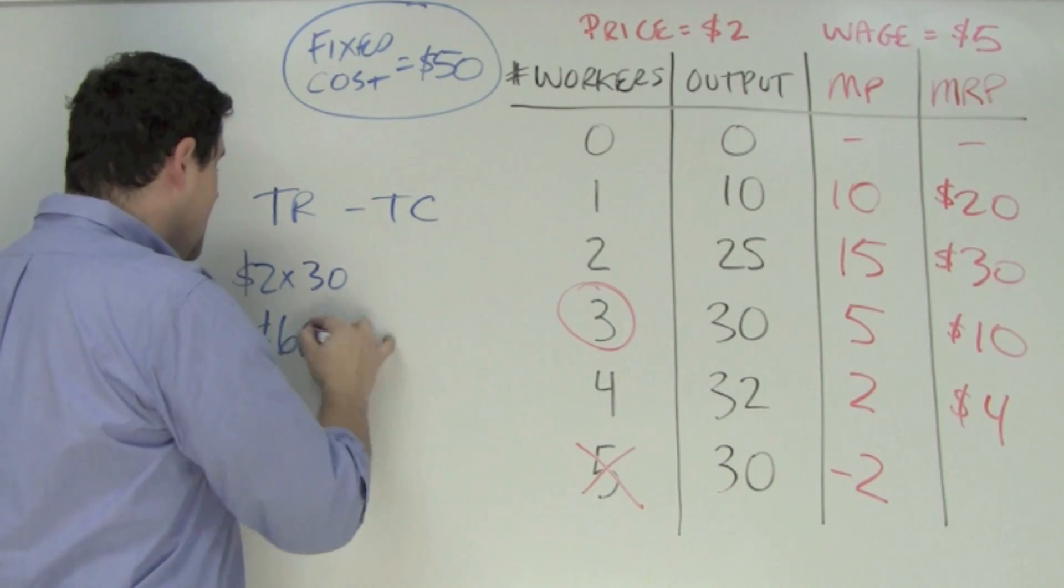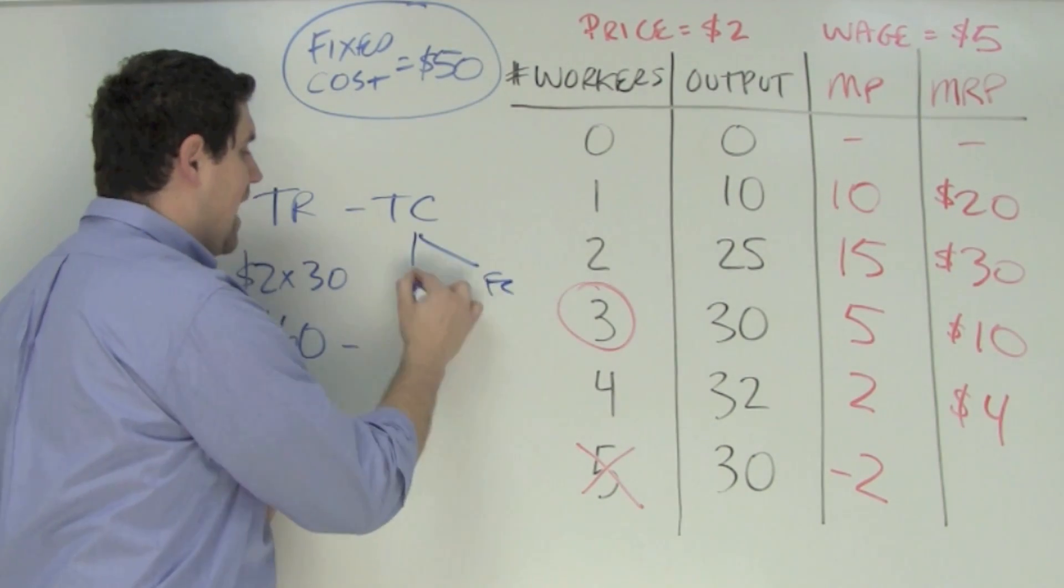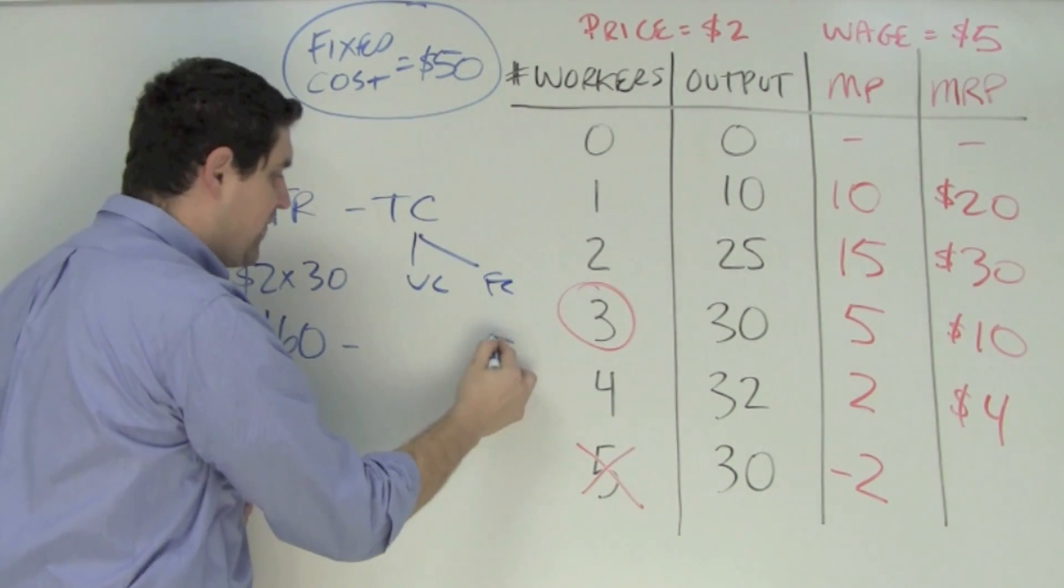So the total revenue grand total is $60 coming in. Total cost is made up of fixed cost and variable cost. The fixed cost, I told you, is $50.